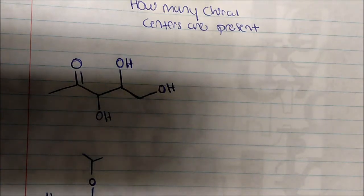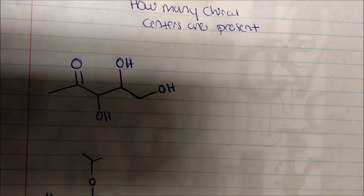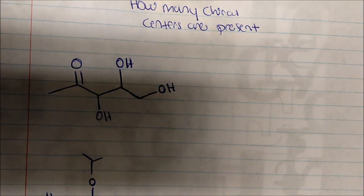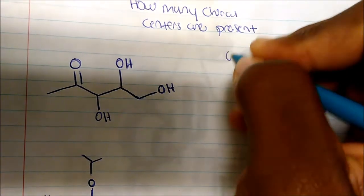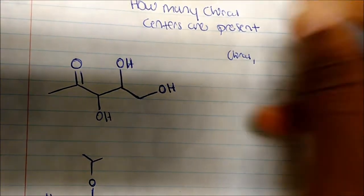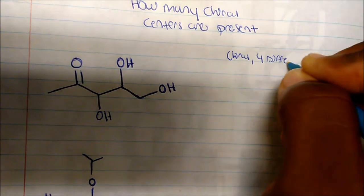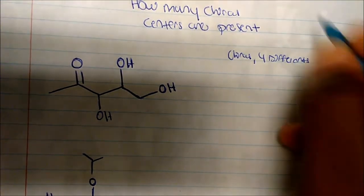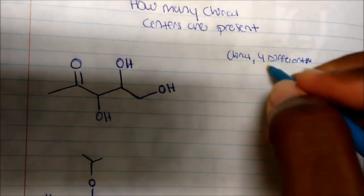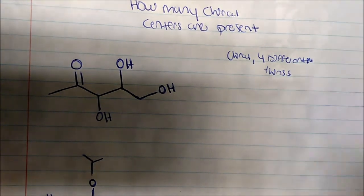In this video I want to talk about how to identify chiral centers in a molecule. We define a chiral atom as one that has four different things bonded to it — that's how I like to think about it.